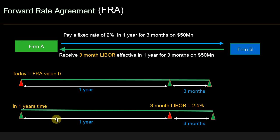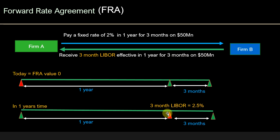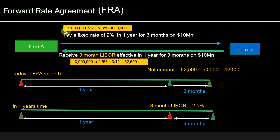Now let's assume that one year has passed. In one year's time, let's assume the three-month LIBOR is 2.5%. The contract says Firm A will be paying 2% on 50 million and receiving the three-month LIBOR effective in one year's time for a three-month period on the same notional of 50 million. So now the three-month LIBOR is 2.5%, meaning Firm A is going to receive more interest than what it's paying — it pays 2% but receives 2.5%.